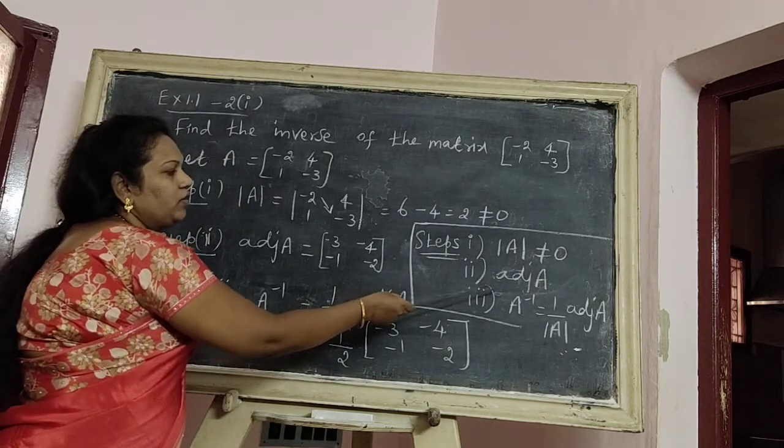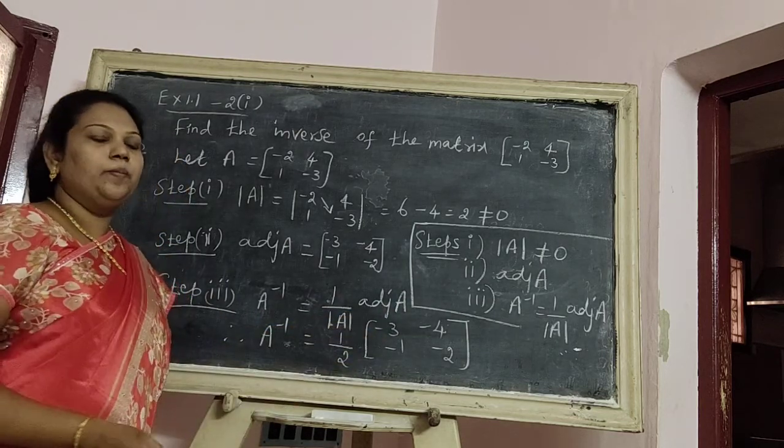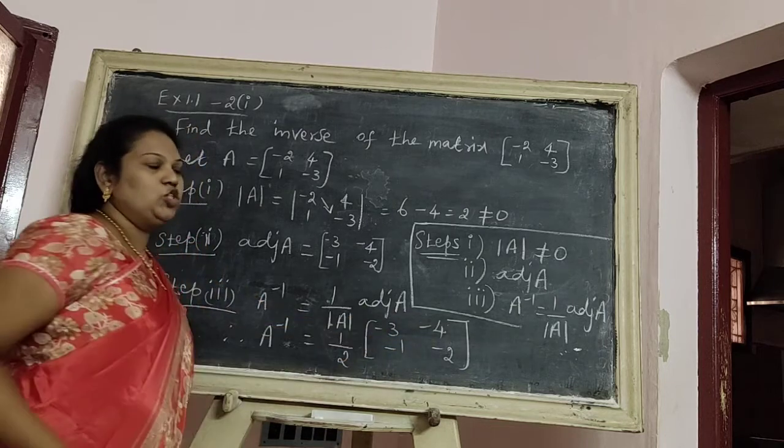Second step, we find the value of adjoint A. Third step, the formula: A inverse must be equal to 1 by determinant A into adjoint A.